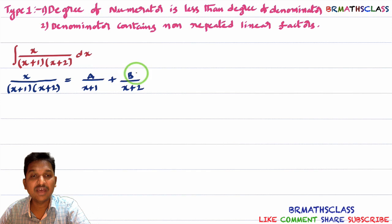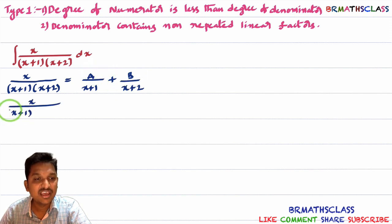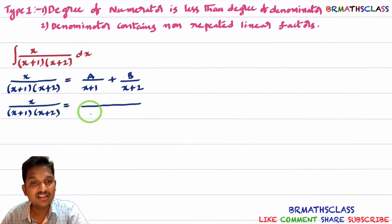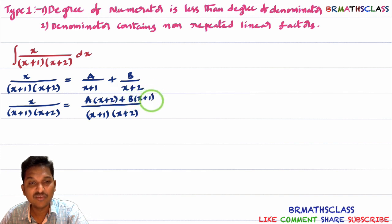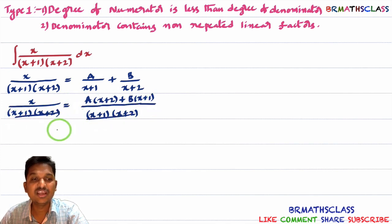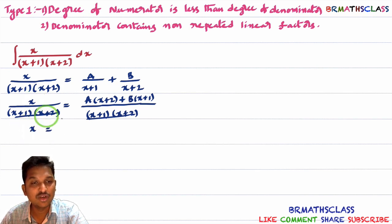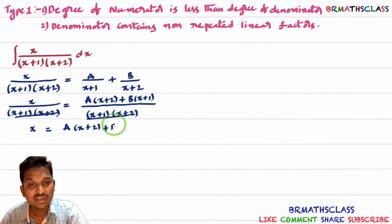Our main intention is to find the values of A and B. Taking x/(x+1)(x+2) equal to A/(x+1) + B/(x+2), the LCM is (x+1)(x+2). After multiplying through, the denominators cancel and we get: x = A(x+2) + B(x+1). This equation is true for all real numbers.